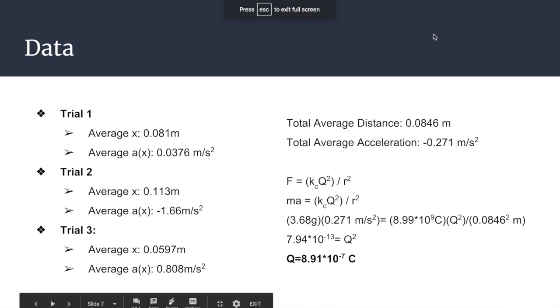Here you can see our average values for acceleration and distance for all three trials. We took the average of all three trials and used those values when computing q. As you can see, we used the absolute value of acceleration rather than the negative value to find q, since only magnitude and not direction is considered when computing the charge for q.